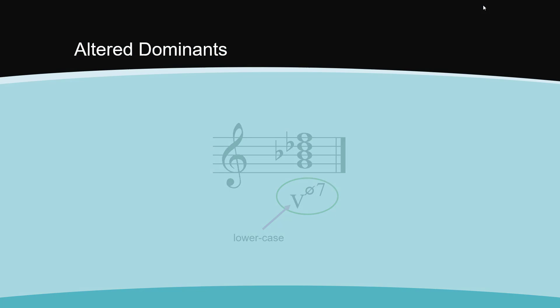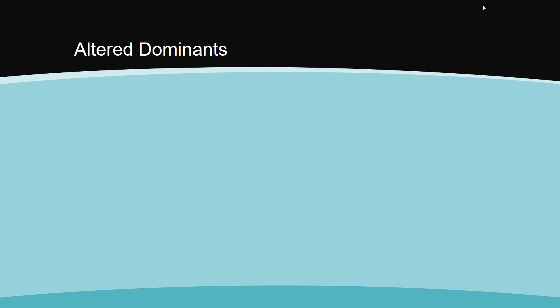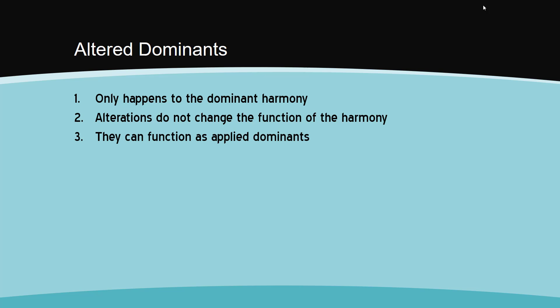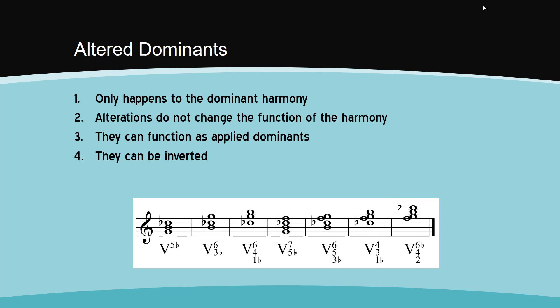A few things to remember about altered dominants. Obviously, because of the way they are named, this only happens to the dominant harmony. The alterations do not change the function of the chord. They are still dominant and want to resolve to the tonic. Just like extended harmonies, they can function as applied dominants to scale degrees other than the tonic. Finally, unlike extended harmonies, altered dominants can be inverted. The Roman numerals for the chords that are not augmented or diminished tend to get a little complex.